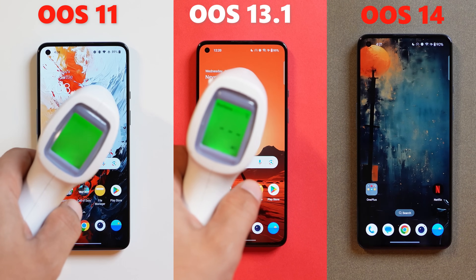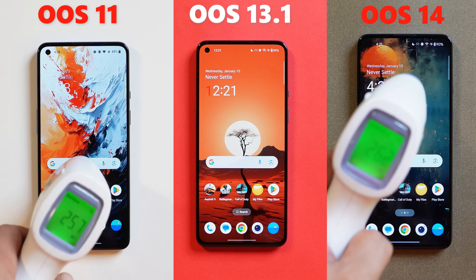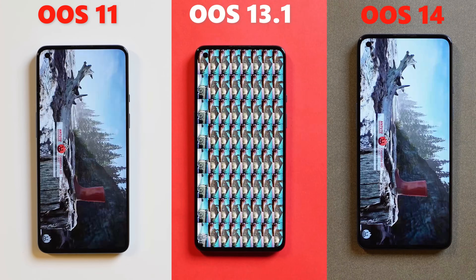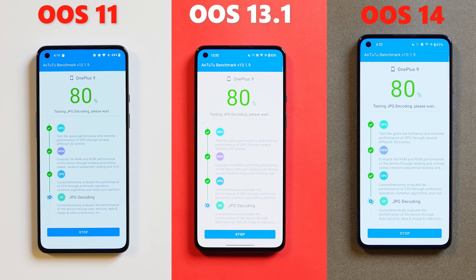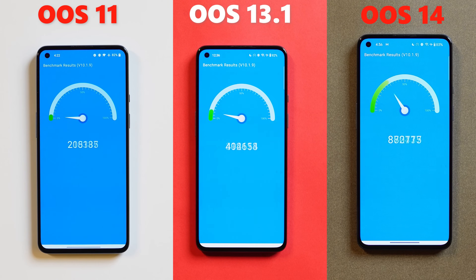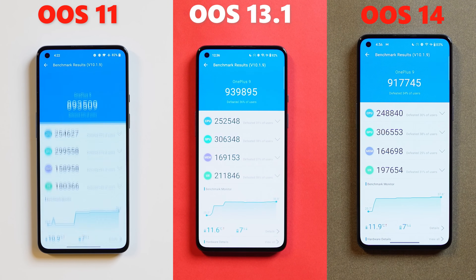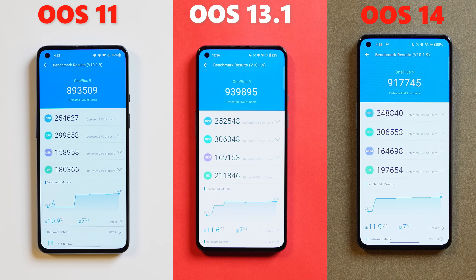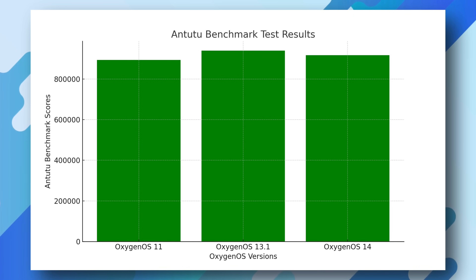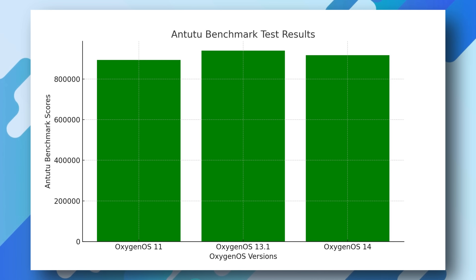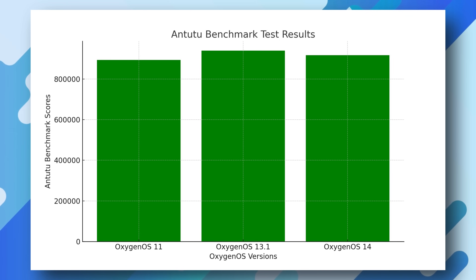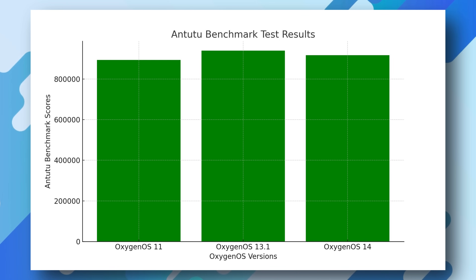Then we moved on to the Antutu Benchmark test. OxygenOS 11 scored 893,509, OxygenOS 13.1 scored 939,895, and OxygenOS 14 scored 917,745. Based on the Antutu Benchmark scores, OxygenOS 13.1 performed the best, achieving the highest score of 939,895. This suggests that in terms of overall device performance — including CPU, GPU, Memory, and UX — OxygenOS 13.1 offers the most robust performance among the three versions tested.